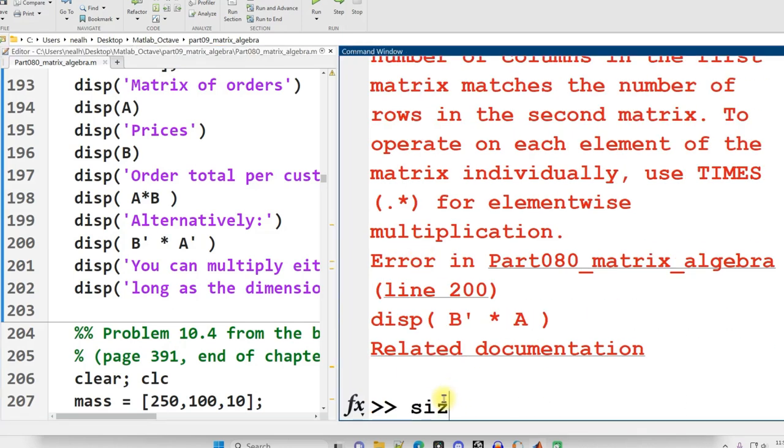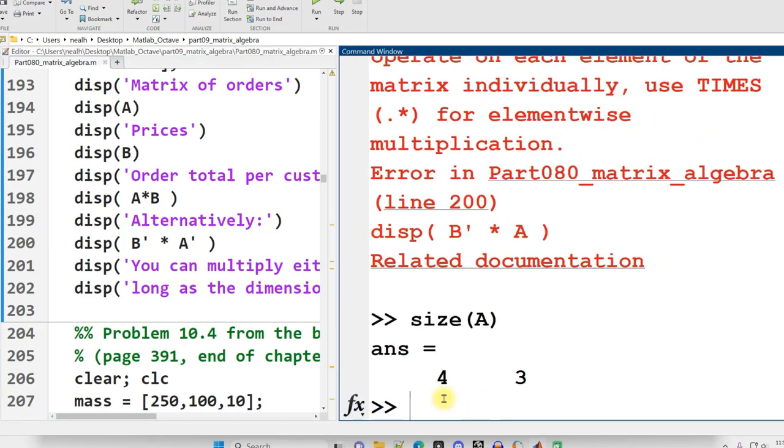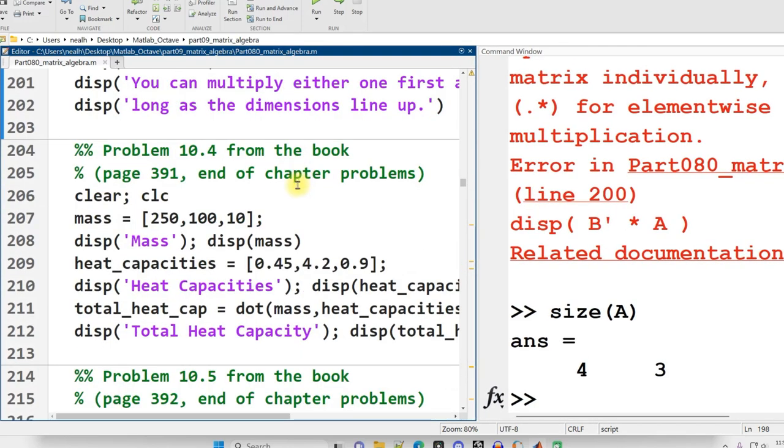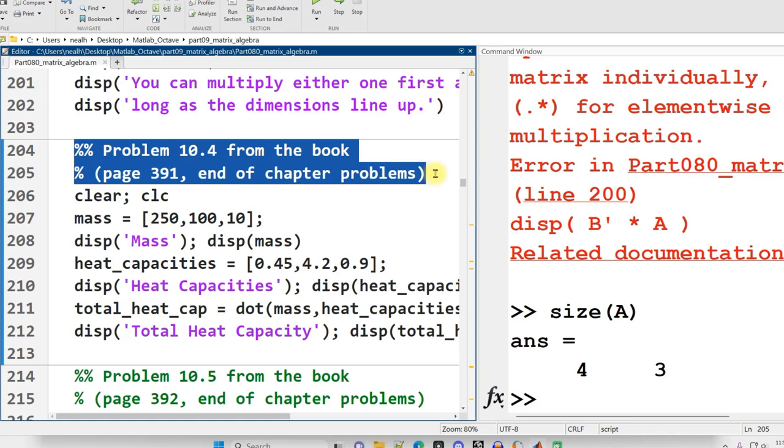You can always use the size function to determine what are the dimensions of A? Oh, it's four rows and three columns. That works in Octave as well as in MATLAB. And let's do another simple little example here, a couple of simple little examples. So these are also from the MATLAB for Engineers, fifth edition.